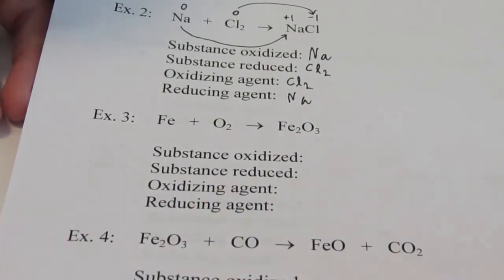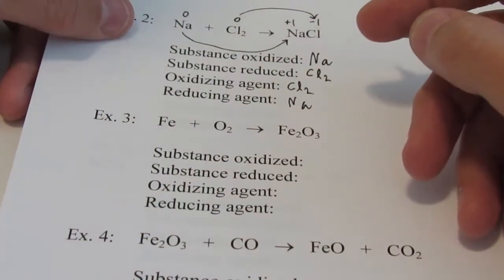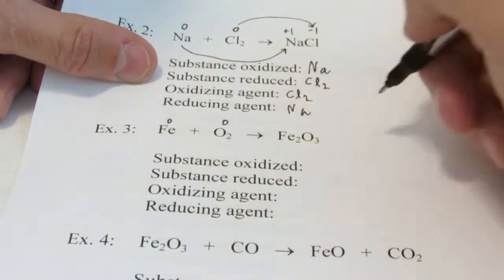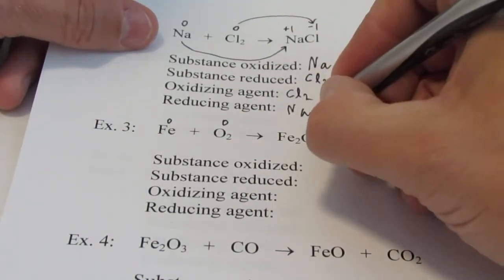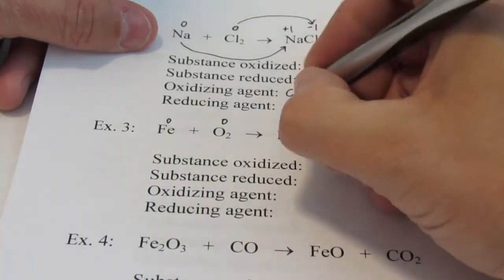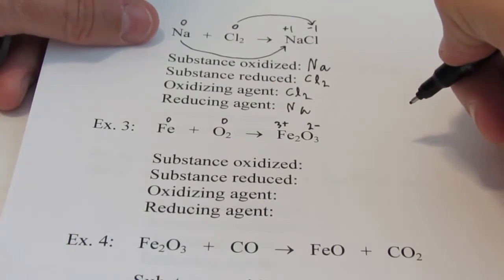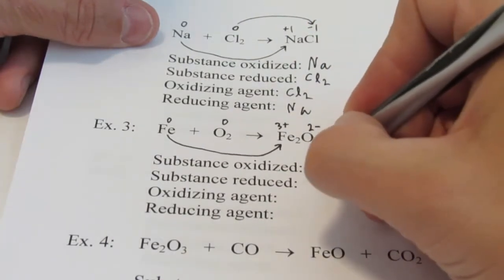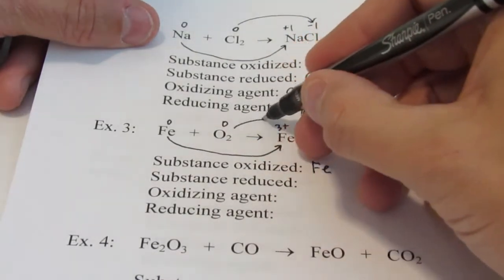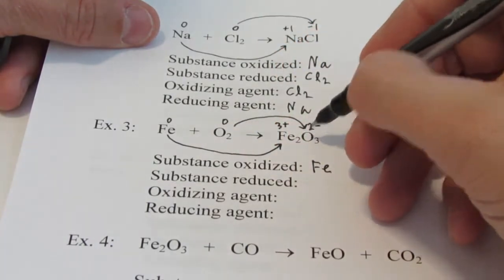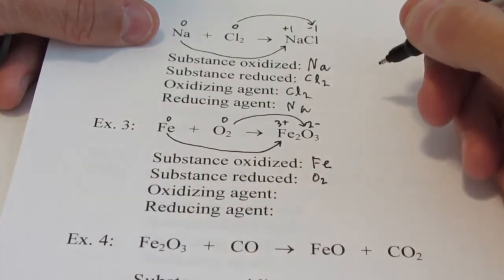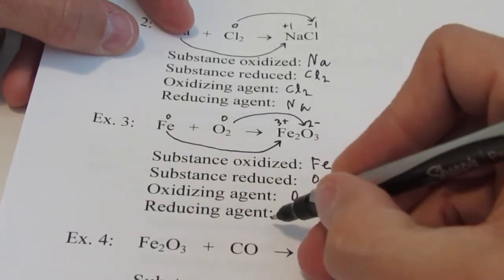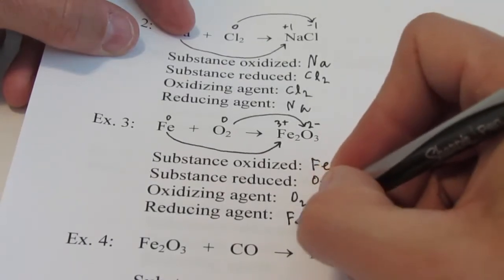Let's try the next one — I expect you to pause and try it on your own first. Iron is in its elemental state and so is oxygen, so they're both zero on the reactant side. On the product side, oxygen is the most electronegative, so it takes its charge of negative two, and that makes each iron three positive. Iron went from zero to three positive — it lost electrons, so iron was oxidized. Oxygen went from zero to negative two — its charge was reduced — so O2 was the substance reduced. The oxidizing agent is O2 and the reducing agent is Fe.